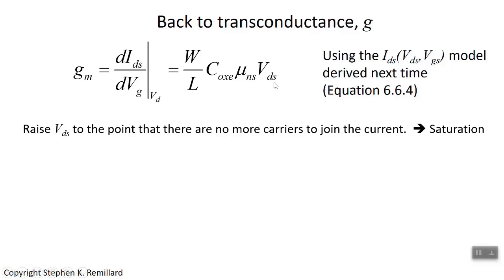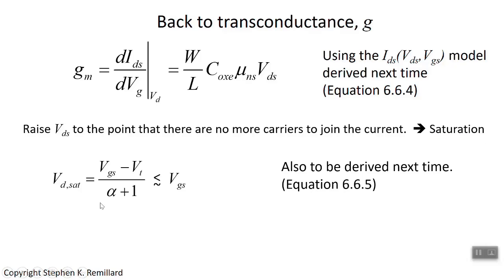You can't raise the drain-source potential indefinitely. Eventually the drain-source voltage reaches a point where no more carriers can join the current. In an ideal MOSFET with no threshold, that would happen when the drain-source voltage equals the gate voltage; it happens sooner because of threshold and body capacitance. When that happens, it's called saturation — a term used a lot with transistors. As you keep raising the drain-source voltage, eventually the drain-source current stops going up. That point is called the saturation voltage, V_DSAT, the value of drain-source voltage when the current stops increasing.